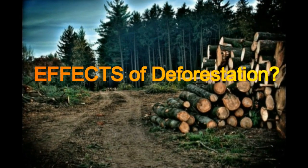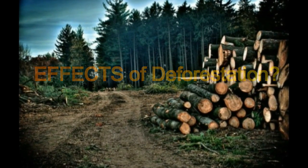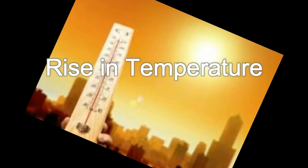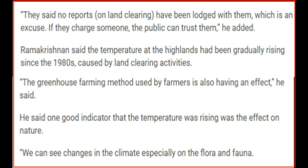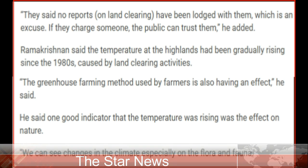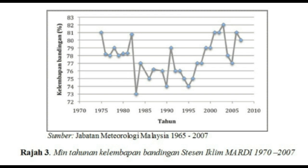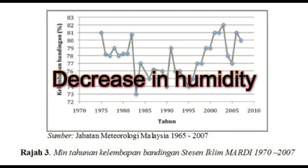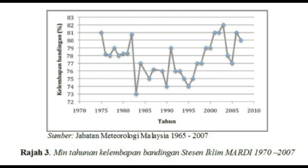What are the effects of deforestation? First of all, rise in temperature. According to the Star News, the temperature of the highland has been gradually rising since 1980, caused by land clearing activities. The second effect of deforestation is the decrease in humidity. The graph shows the decrease in humidity of Cameron Highland from 1965 to 2007.